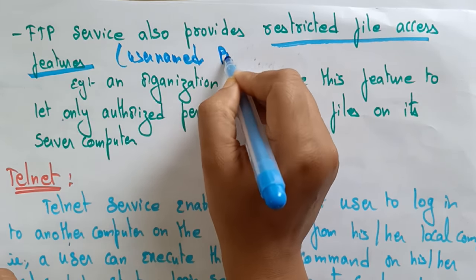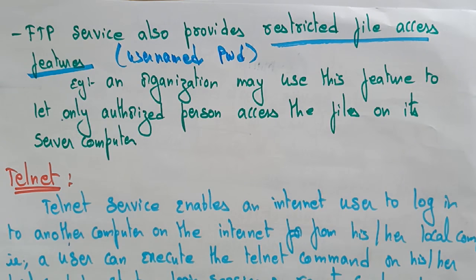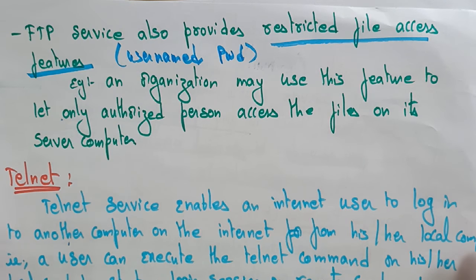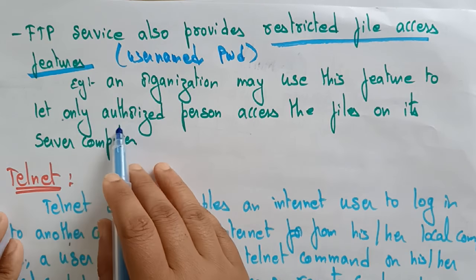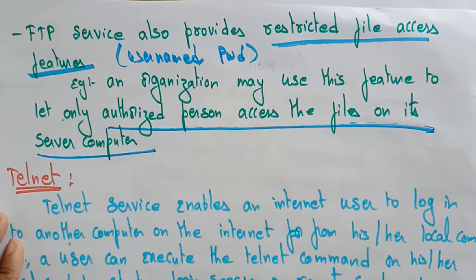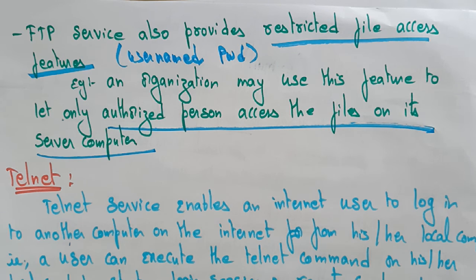With a username and password you can maintain restrictions on your file, so only the person you want to share it with can view that file. For example, an organization may use this feature to let only authorized persons access a file on its server. Everyone is not allowed — only the person who knows the username and password can access that file.